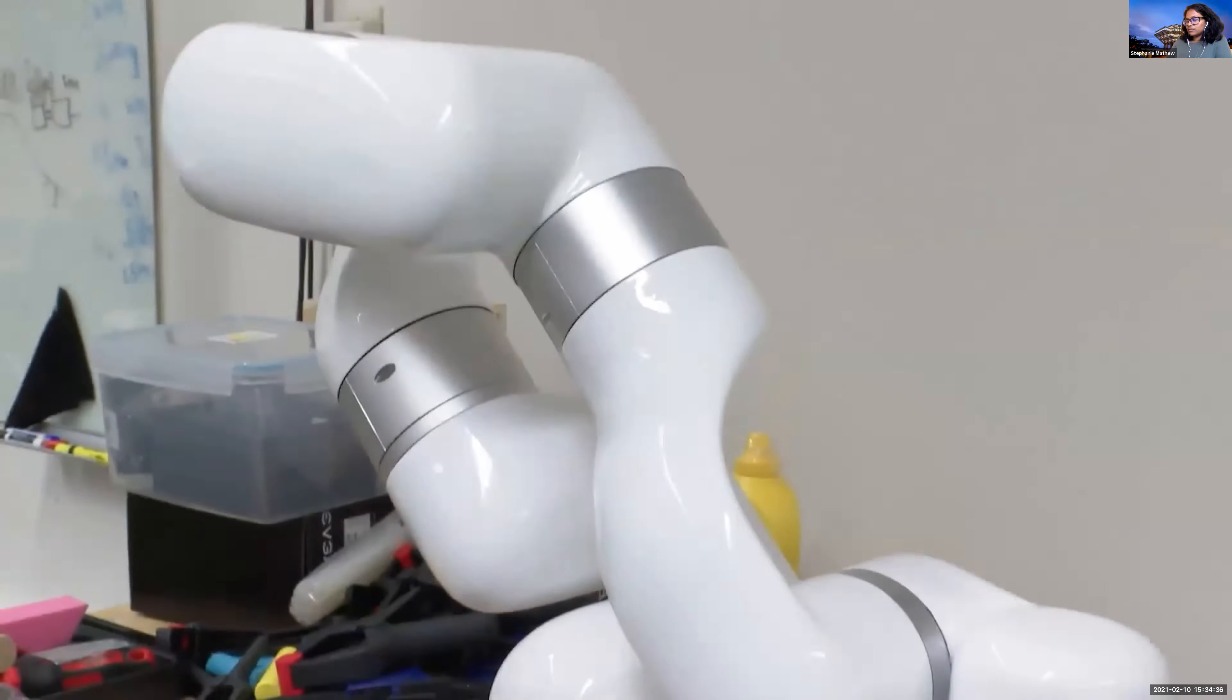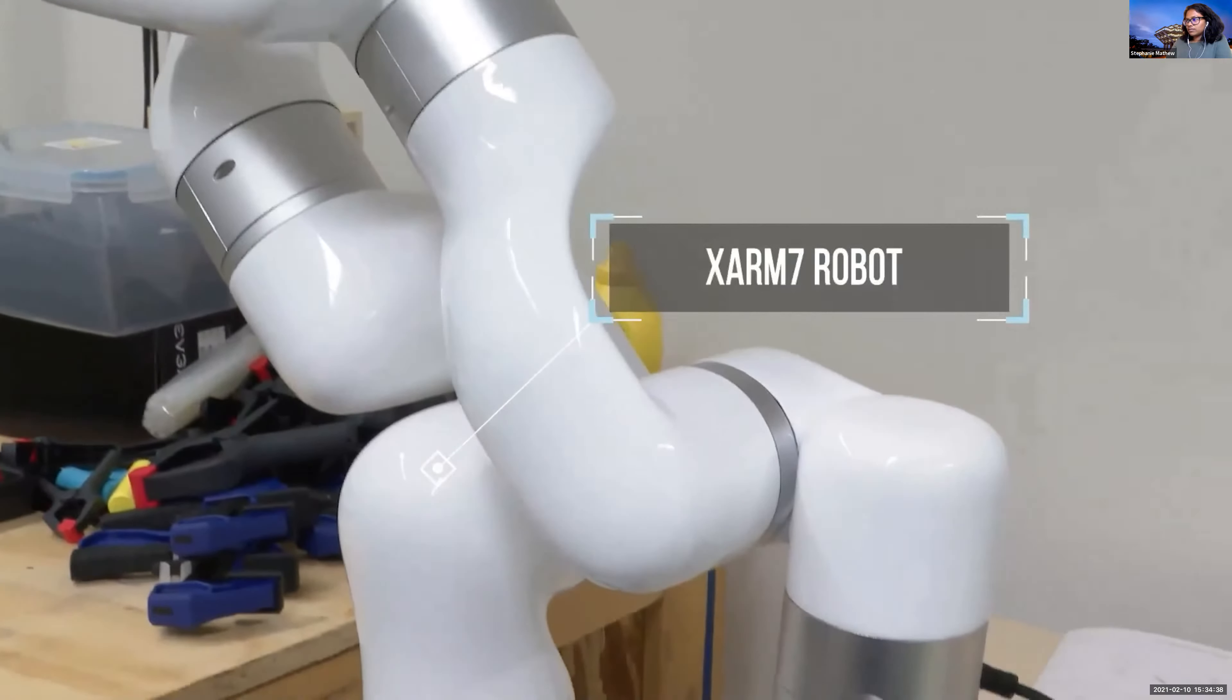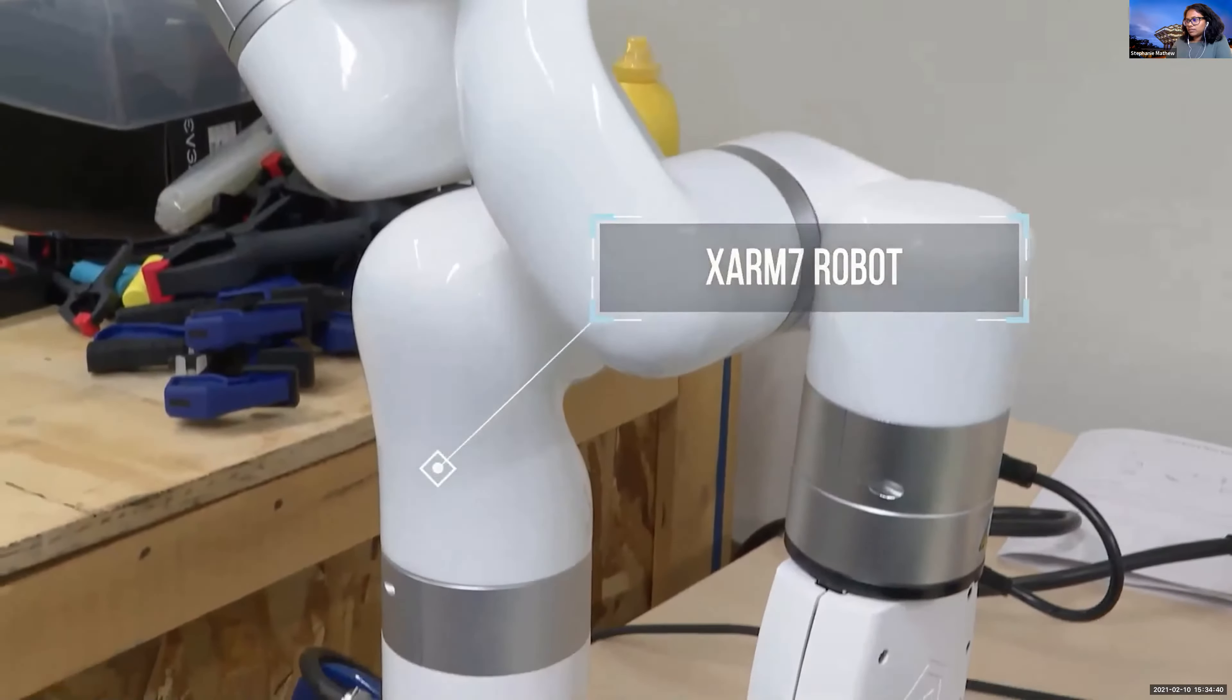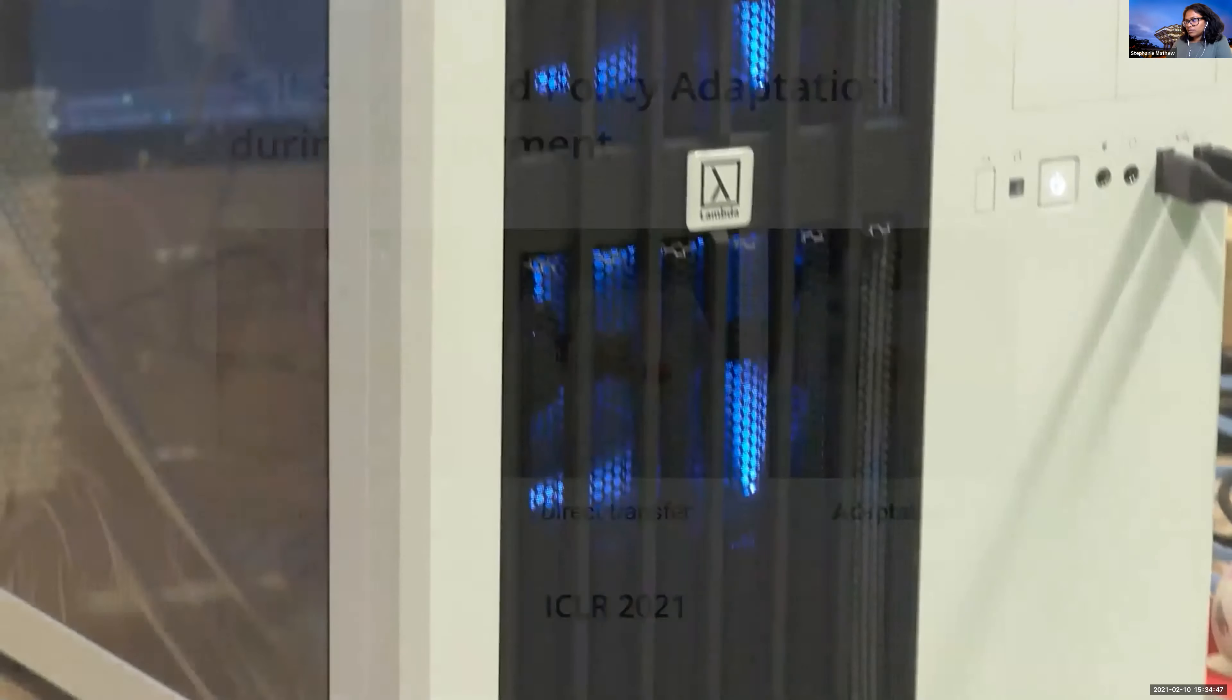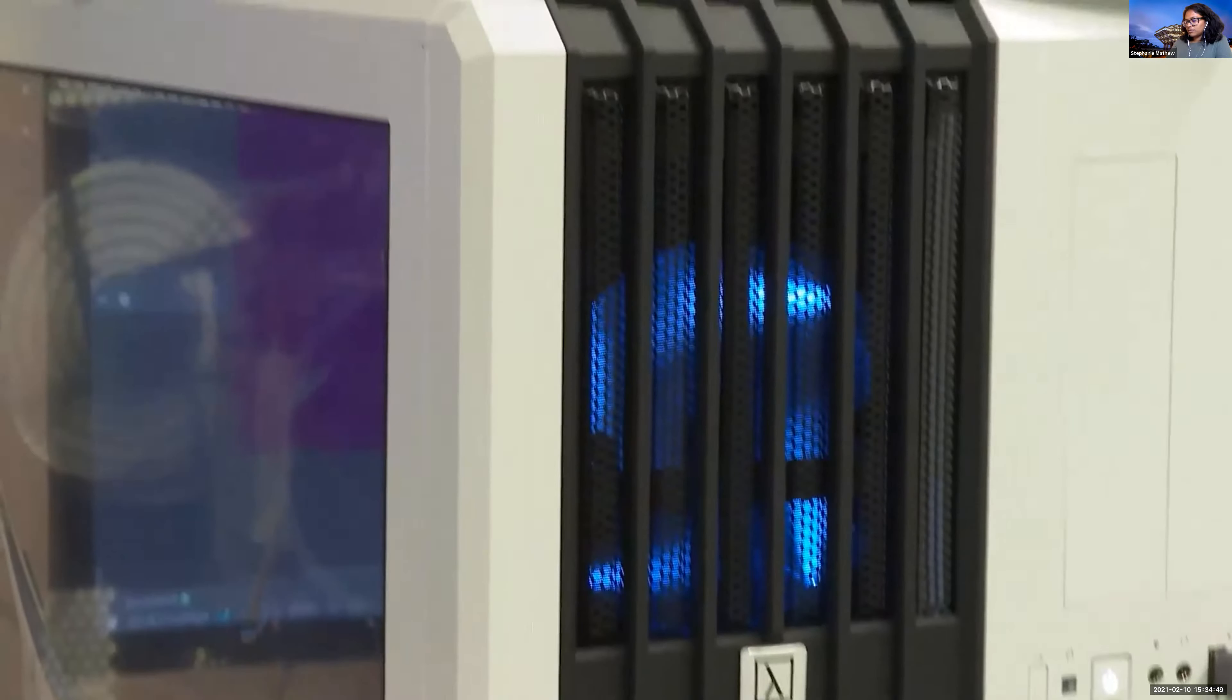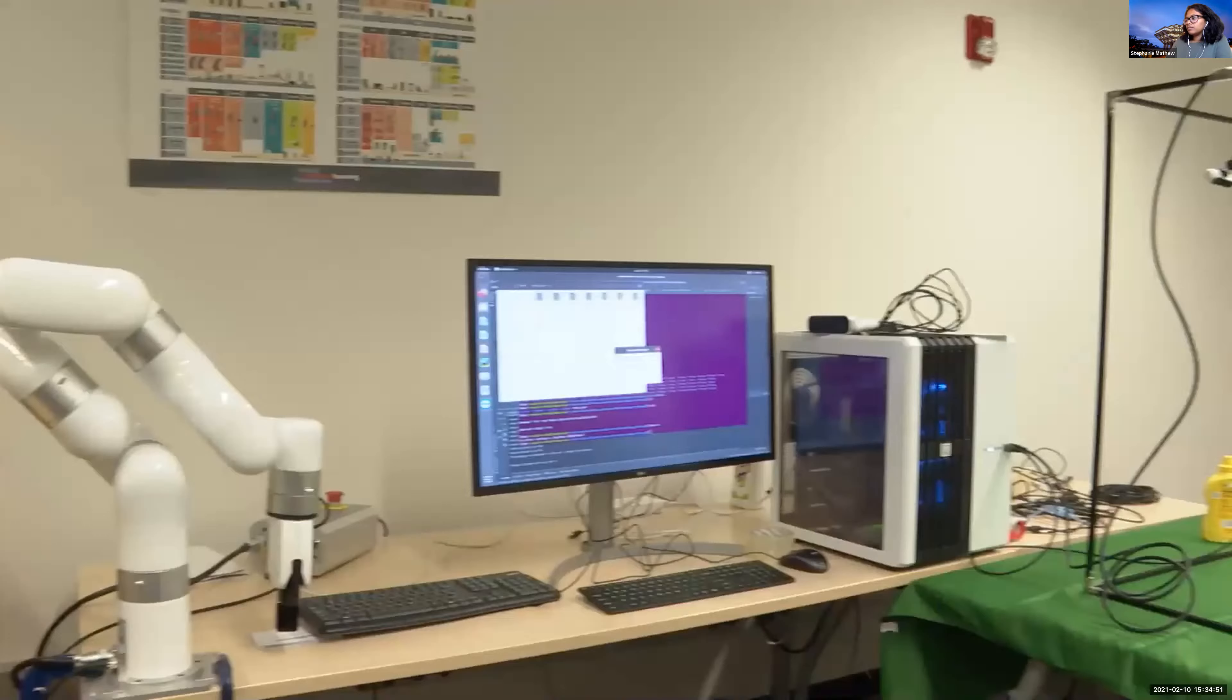This is the X-ARM-7 robot, which is used to do manipulation tasks. Specifically, the Wang group studies visual-based reinforcement learning for robotics manipulation in simulation, as well as how to transfer the learned policy to real robots.